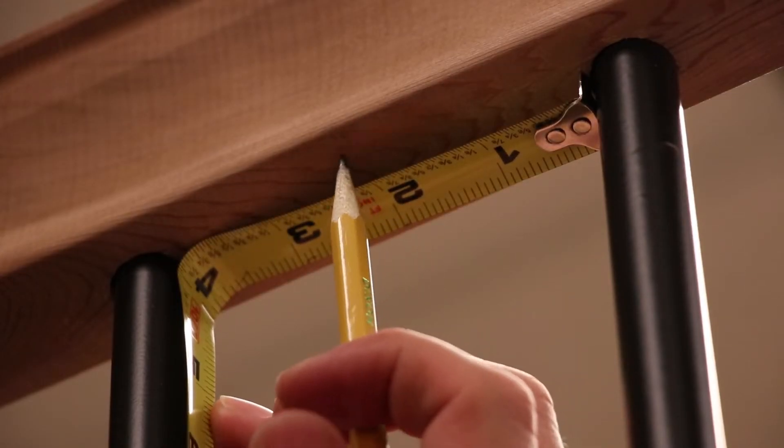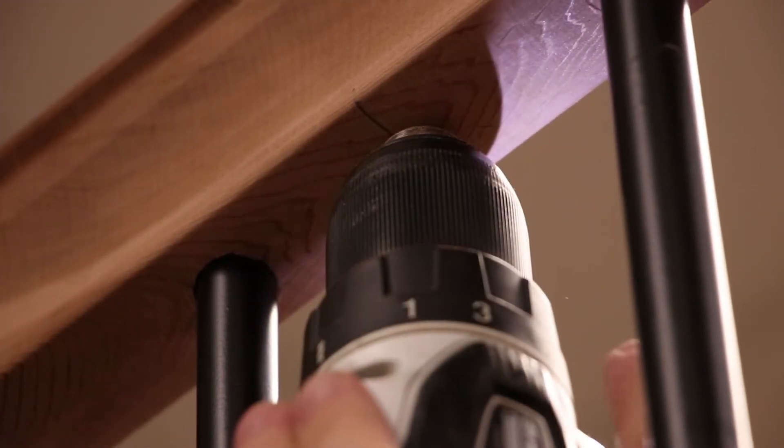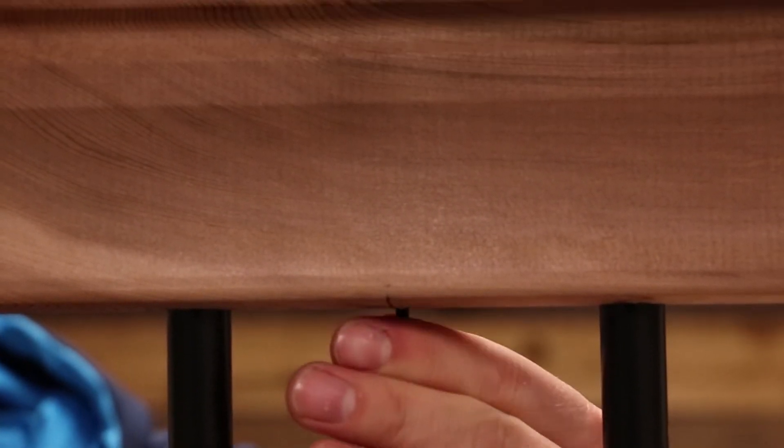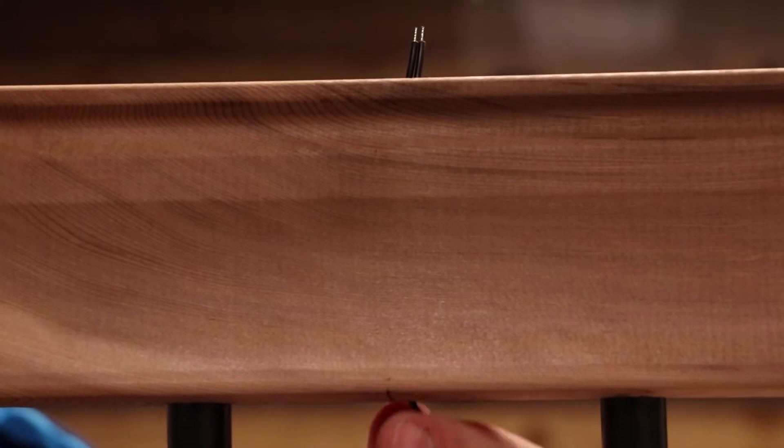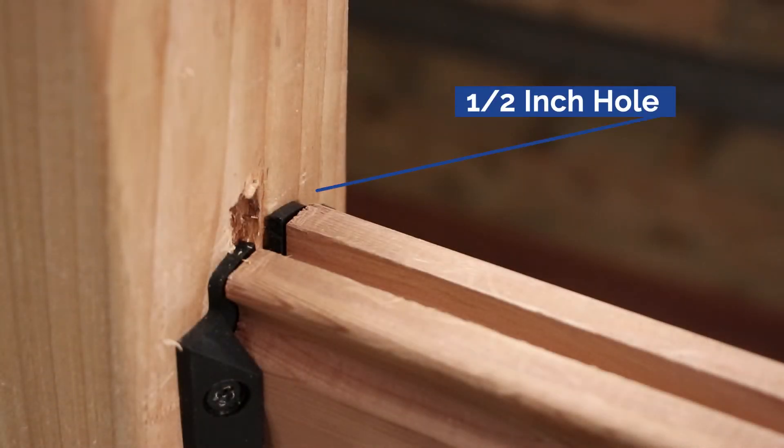Second, decide and mark on your rail where you would like to mount your fixture. Generally, builders will install rail lights in the center of the span of the railing to provide illumination between the posts.